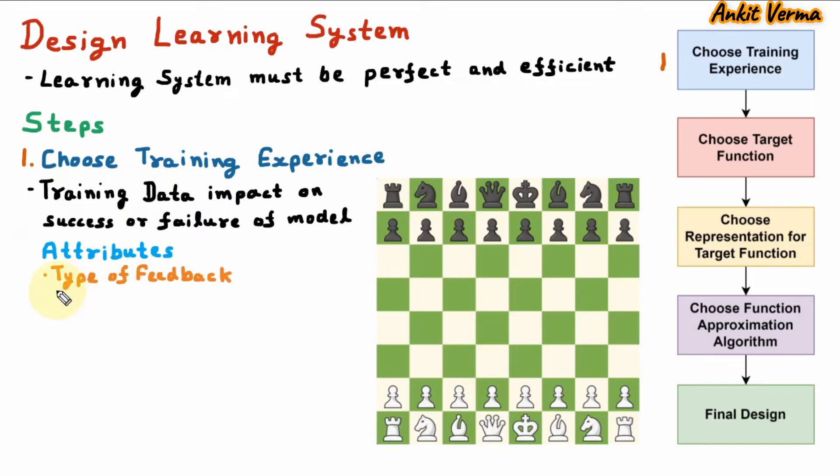The first attribute is type of feedback. Training data must provide direct or indirect feedback regarding choices. Here direct means immediate and indirect means after some time. We are taking the example of chess. To design a chess game, we need to train this model using training data. It must provide us direct and indirect feedback.